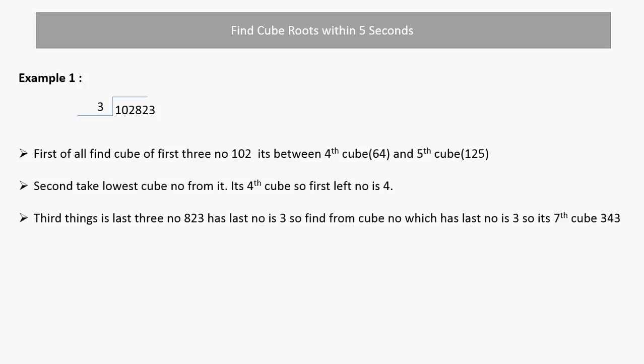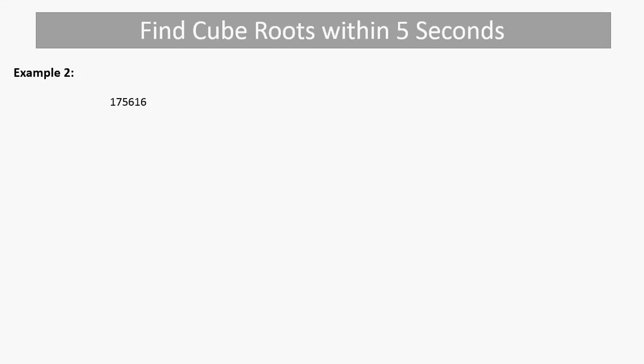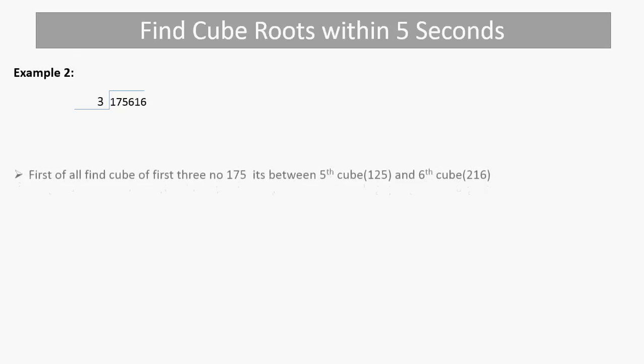The last 3 digits are 823. The last digit is 3, so which cube number has a last digit of 3? 7 cubed is 343, so 7 has last digit 3. So the last digit of our answer is 7. The first digit is 4, so the answer is 47.